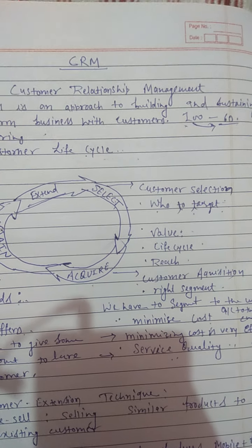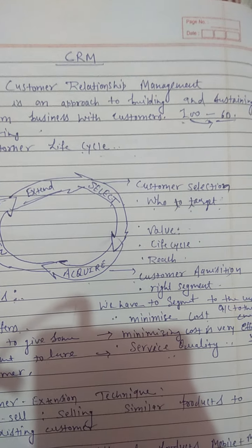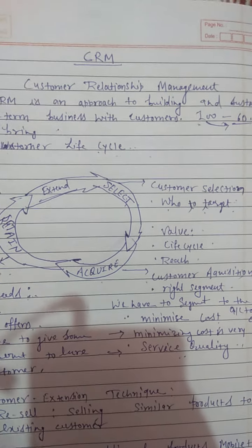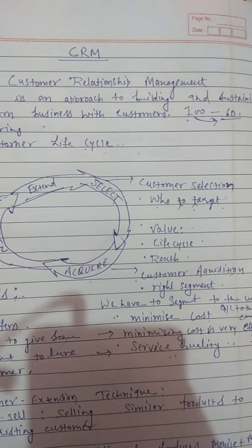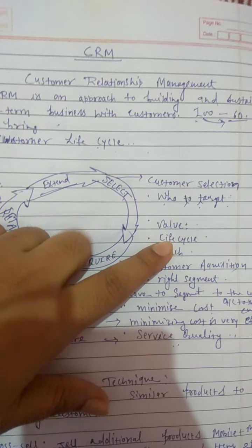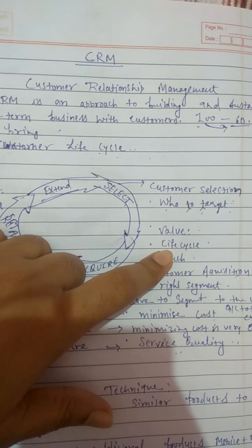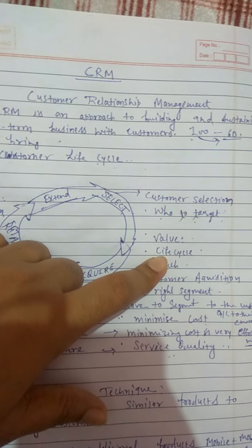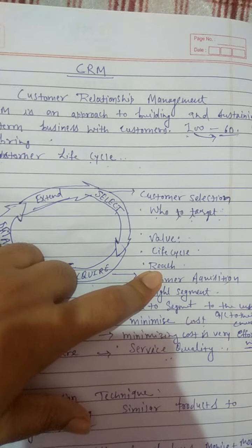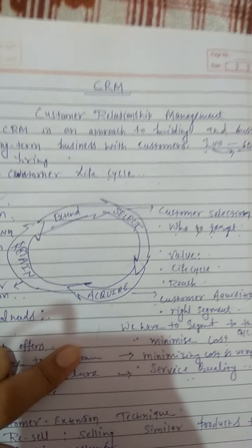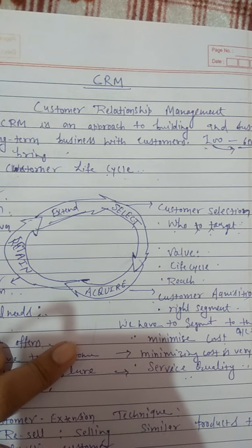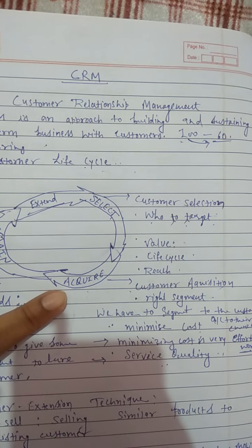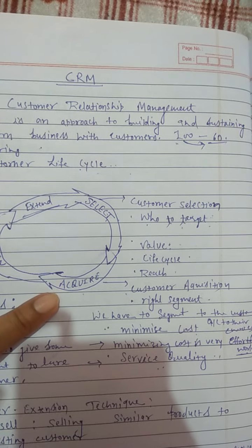You have to target only those types of customers. The second point is you have to give value to the customer — meaning you have to fulfill their needs. The life cycle also means you have to sustain your customer.